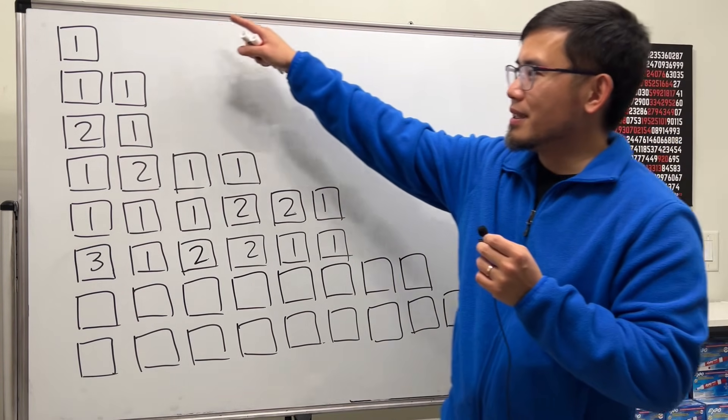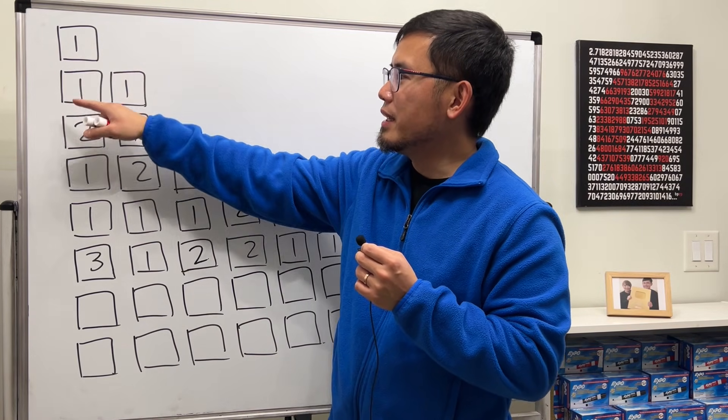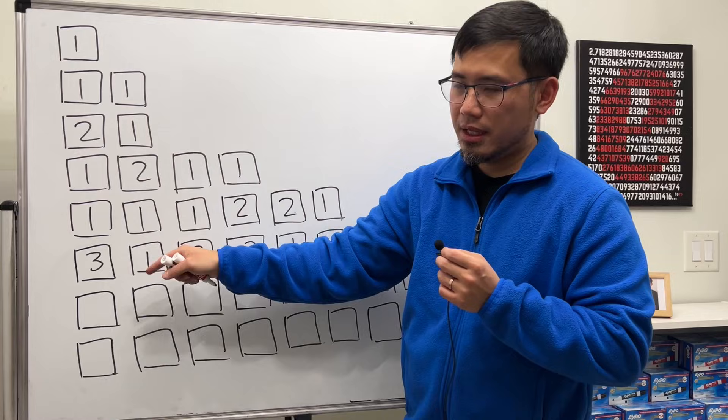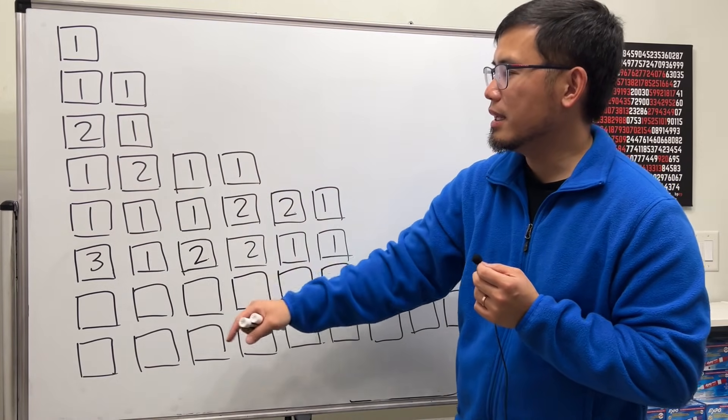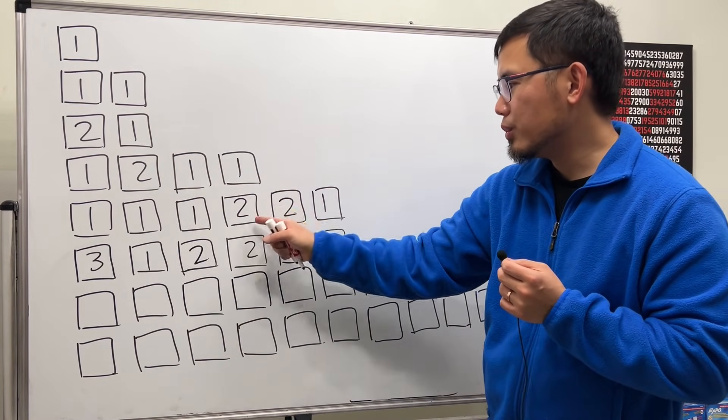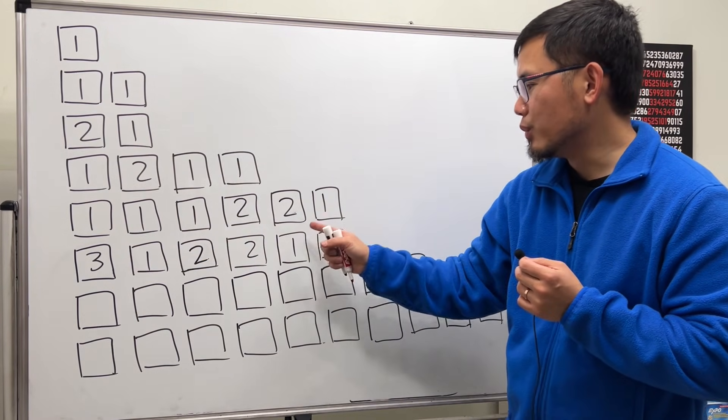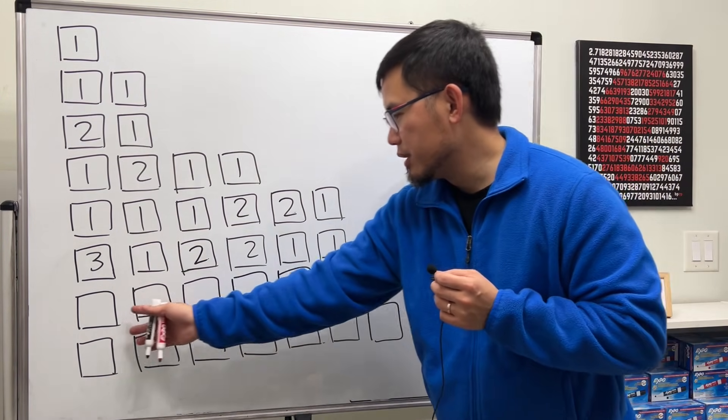Have a look here. We have the first box is one, and then the second row we have one one. Then the next row we have two one, and then we have one two one one. Then one one one two two one, and then three one two two one one, and then we're going to fill in these boxes.